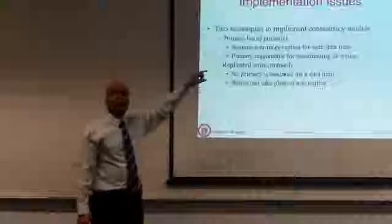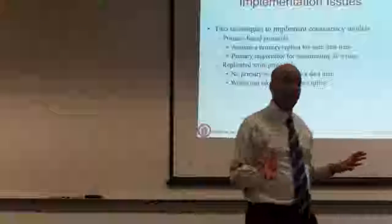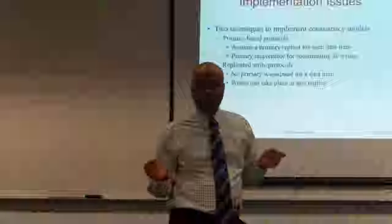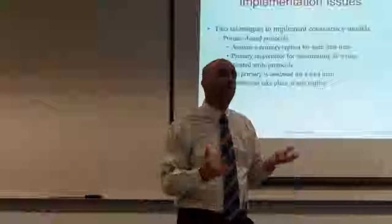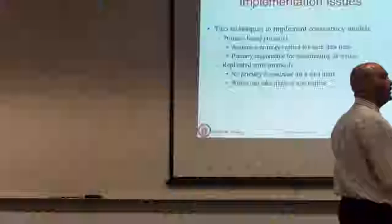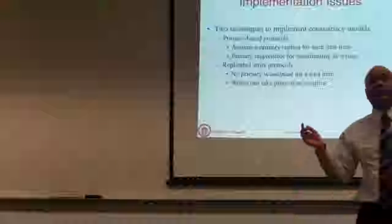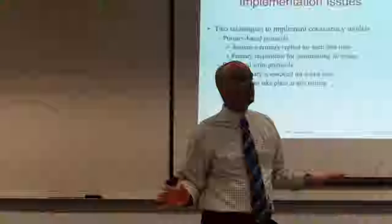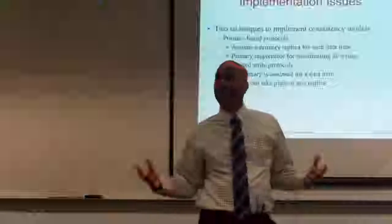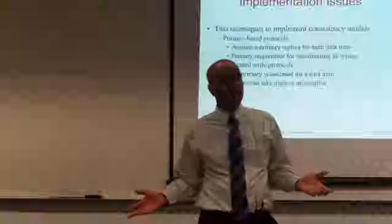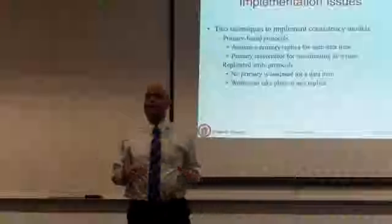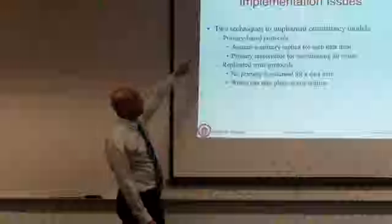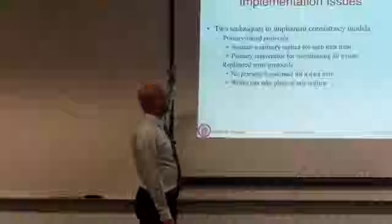In the primary-based model — remember we are talking about data replication, consistency and so on — there is a primary node responsible for the data item. There is a primary replica and there are secondary replicas. Writes have to go to the primary replica, which then sends them to the secondary replicas. Reads can happen at any replica. So writes go through the primary, reads can occur at any replica — that is called the primary-based protocol for data replication.